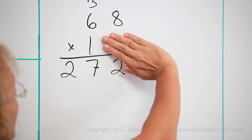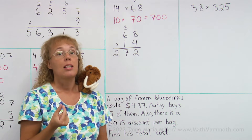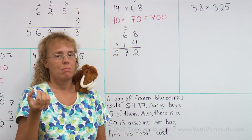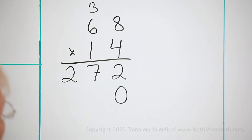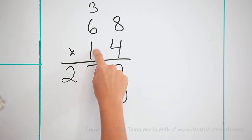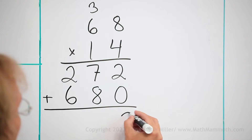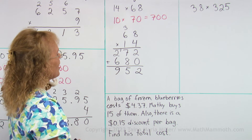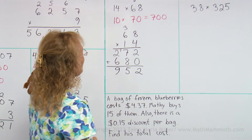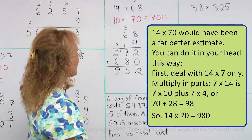And now I will ignore this 4 and multiply 10 times 68. Now, 10 times 68 will end in a zero because it is 10 times. Therefore, I will start by putting the zero there, and after that I can simply multiply 1 times 68. So 1 times 8 is 8, 1 times 6 is 6, and lastly add to get 952. That's far from our estimate, and I was kind of expecting that because I rounded this down a lot.